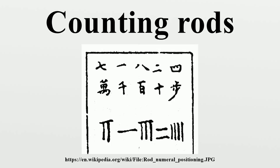The value of a number depends on its physical position on the counting board. A nine at the rightmost position stands for nine. Moving the rods one position to the left gives 90, and shifting left again to the third position gives 900. Each time one shifts a number one position to the left, it is multiplied by 10. Each time one shifts a number one position to the right, it is divided by 10. This applies to single-digit or multiple-digit numbers.